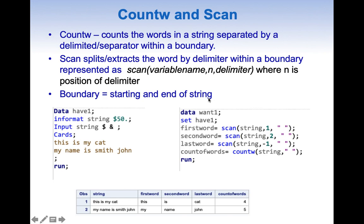Till now we have just tried to understand the definitions. Let us try to understand this better with an example. In this example we are creating a data set as shown and then applying our COUNTW function and SCAN function. Here first let us look into the COUNTW function. The COUNTW function is simple — we just say COUNTW, then the variable name on which we want to apply it, and the delimiter.